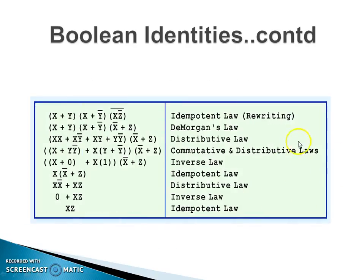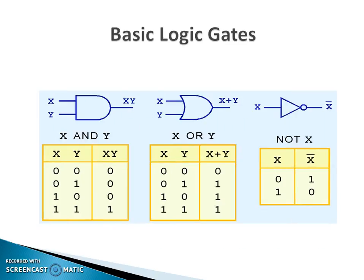These are the complete list of Boolean identities we just covered. Now, as you know the basic gates, let's review them before we move forward. The basic gates are AND, OR, and NOT. The AND gate symbol represents x dot y — it is like multiplication of two variables. OR is like x plus y, and NOT is the complement: if I give 0 as input I get 1 as output, and if I give 1 as input I get 0 as output.